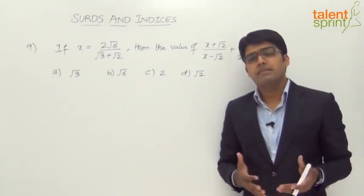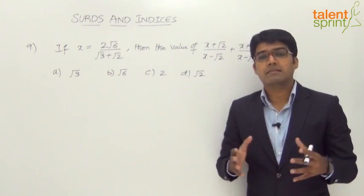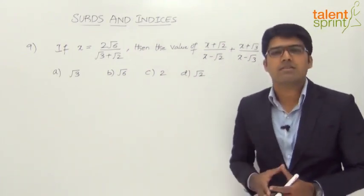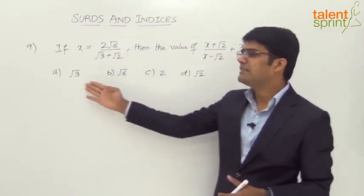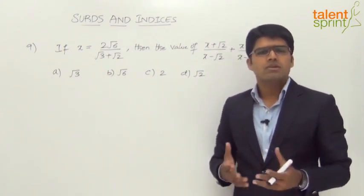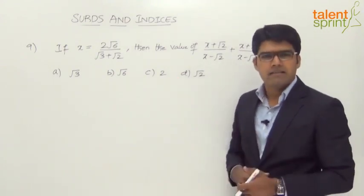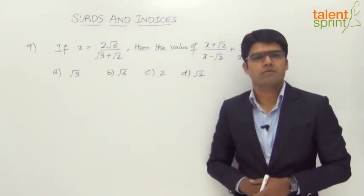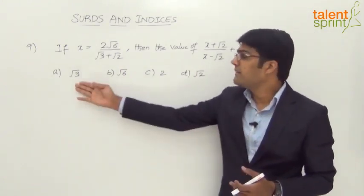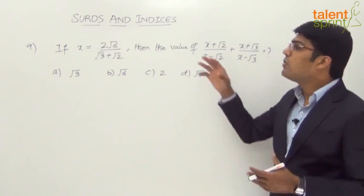As discussed in an earlier question, there are cases where we can do an approximate calculation to arrive at the correct answer, but that depends on the type of answer options given. Let us analyze if approximation works here. √3 is approximately 1.73, √6 is around 2.4, option C is directly 2, and √2 is approximately 1.414. The answer options are close to each other: 1.7, 2.4, 2, and 1.4.